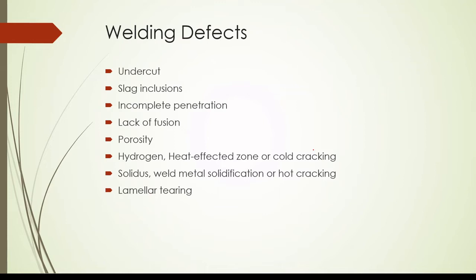The types of welding defects that we mostly identify are: undercut, slag inclusions, incomplete penetration, lack of fusion, porosity, hydrogen heat affected zone cold cracking, solidification metal cracking, hot cracking, and lamellar tear. Let's discuss about each type of these defects in detail.